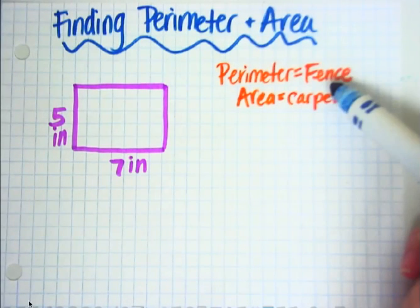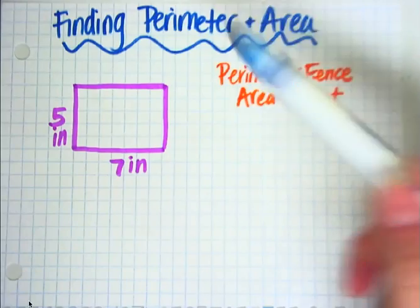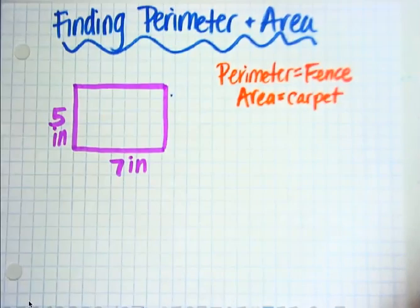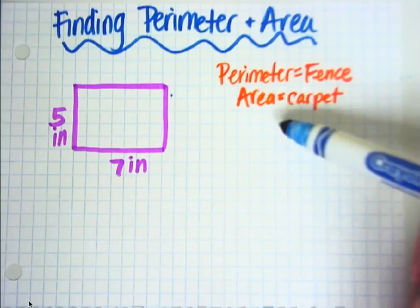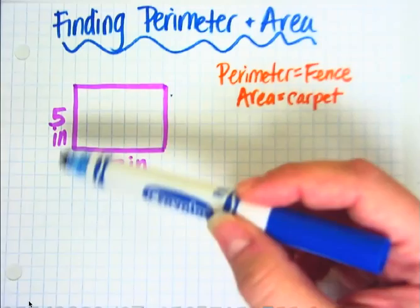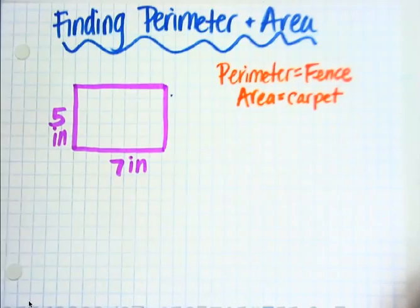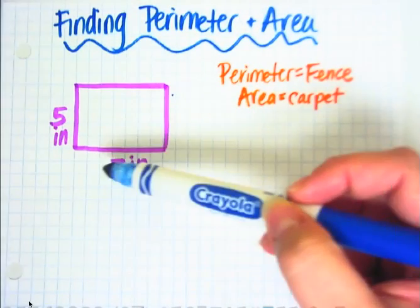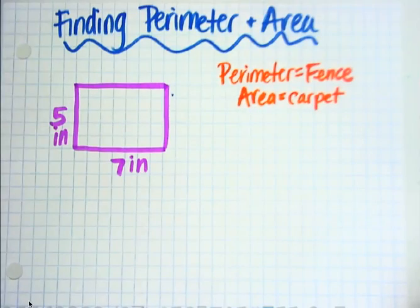Perimeter equals the fence of a shape, which means if you were to build a fence around the shape, how much fencing would you need? The area is the amount inside the shape. So if you were to lay carpet inside that shape, if you were to go to Home Depot, you would need to tell them how much carpet you need to buy for that shape, or it could be your room.